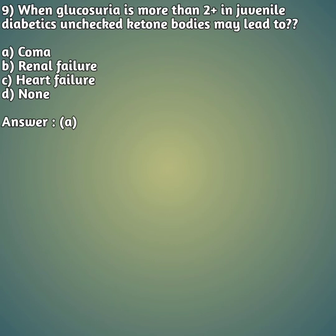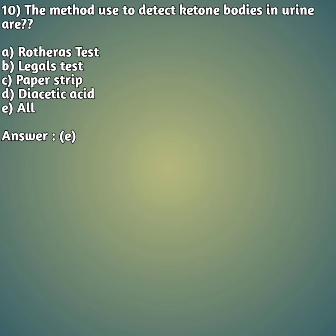Ninth question: when glycosuria is more than two plus in juvenile diabetes — juvenile diabetes is diabetes found in younger patients, which is now common — unchecked ketone bodies may lead to: option A: coma, option B: renal failure, option C: heart failure, option D: none. The right answer is option A — coma.